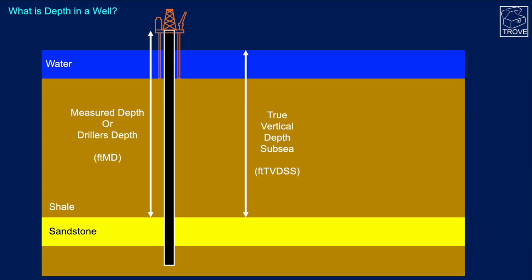The true vertical depth is normally referenced to a subsea datum, so it's from sea level all the way down to whatever depth you are measuring to. Commonly that's written as feet TVD subsea, or sometimes feet subsea — SS — FTSS.